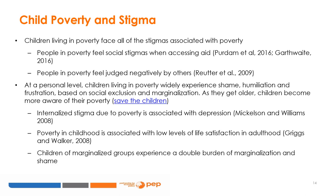Living in poverty is also associated with stigma, which has negative impacts on children's lives. People in poverty may avoid accessing available aid because of this, and many children living in poverty report feelings of shame, frustration, and humiliation. All these negative sentiments are associated with depression, low life satisfaction, and marginalization that reinforce the cycle of poverty. Policies should aim to try to break this cycle.